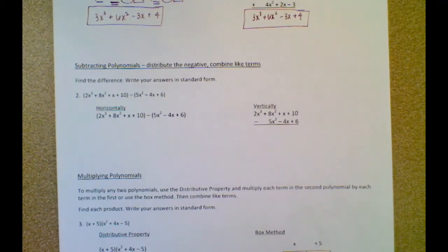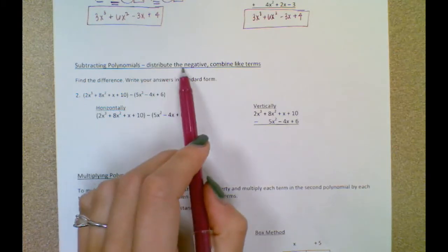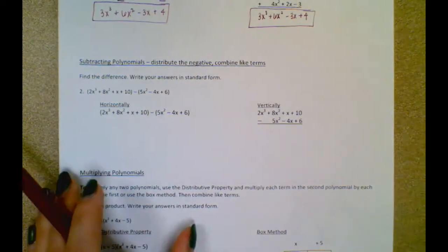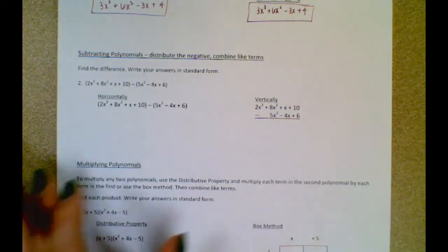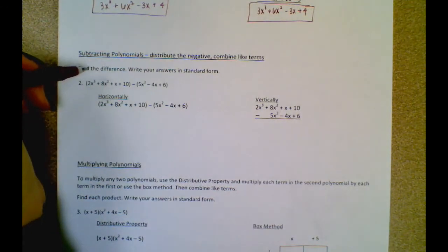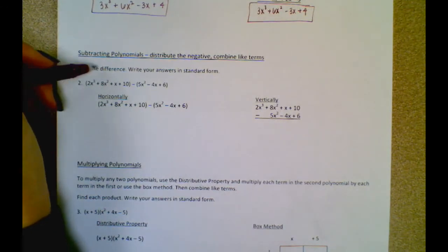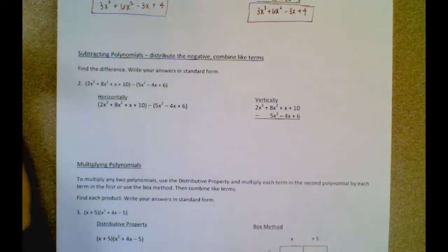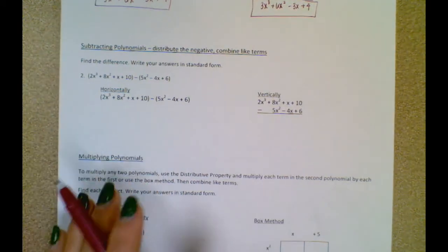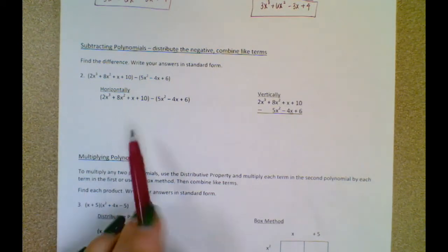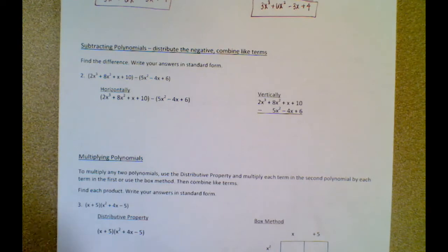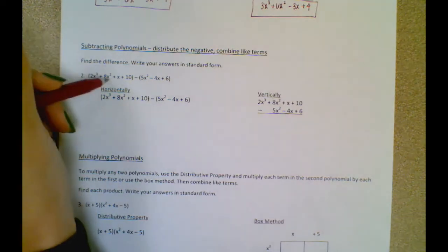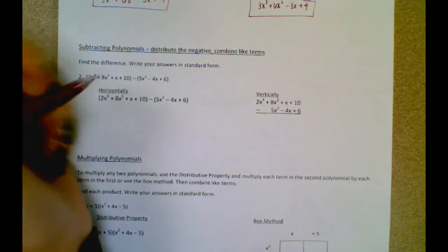Subtracting polynomials: first you want to distribute the negative sign, and then you're going to combine your like terms. So it's very similar to adding, but first you've got to distribute that negative. The directions say find the difference, write your answers in standard form. Again, you can do this horizontally or vertically.